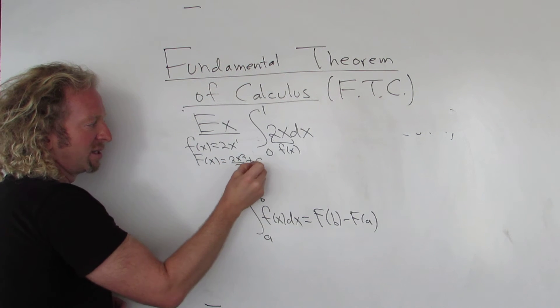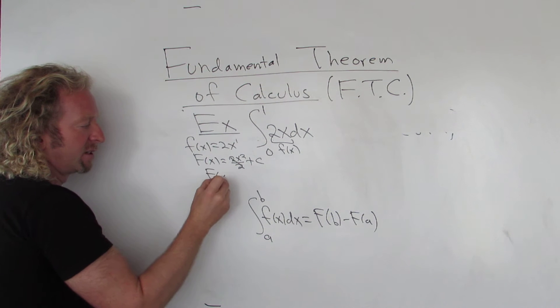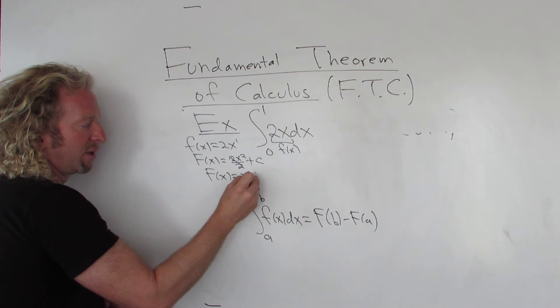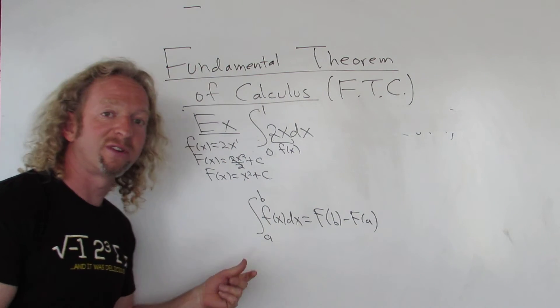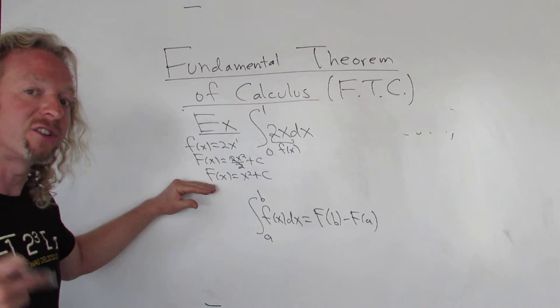Then you can add a constant, so I'll just put plus c. So big F of x would be x squared plus c. Just use the power rule to integrate, the 2's cancel, and that would be the most general antiderivative. It's called the general antiderivative of this function.